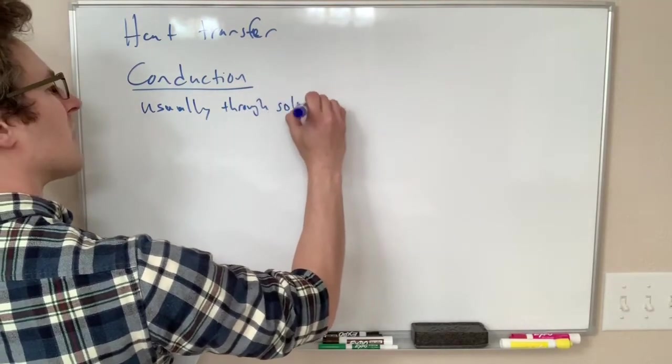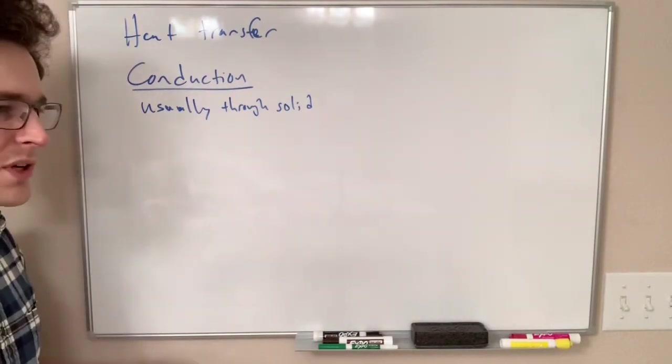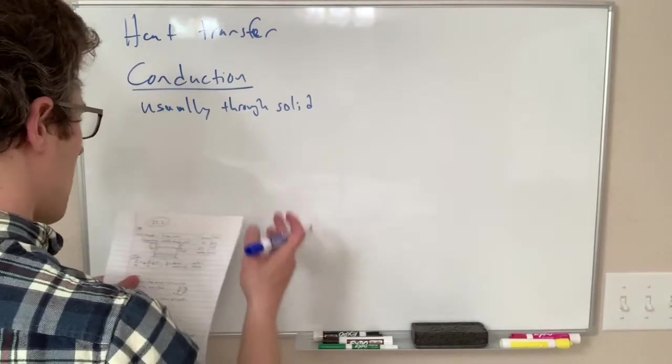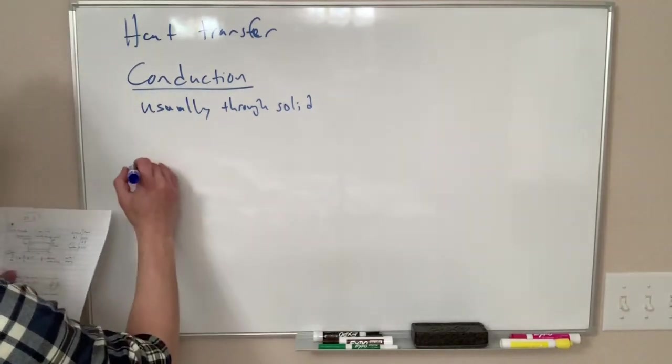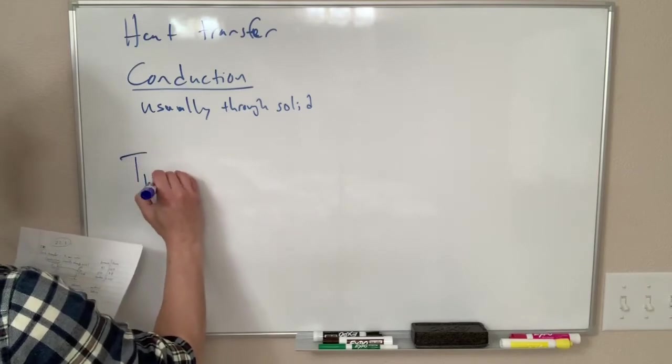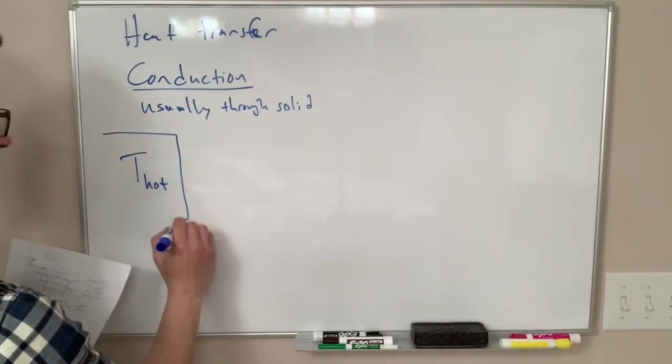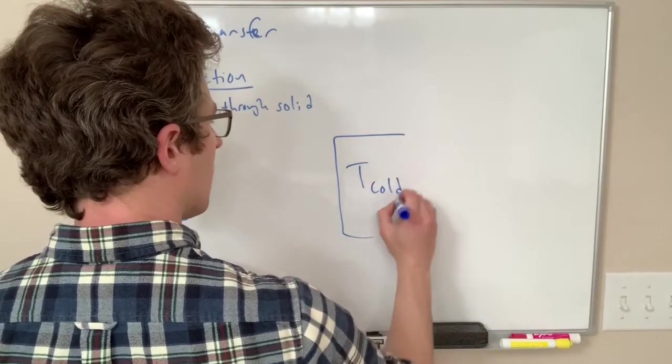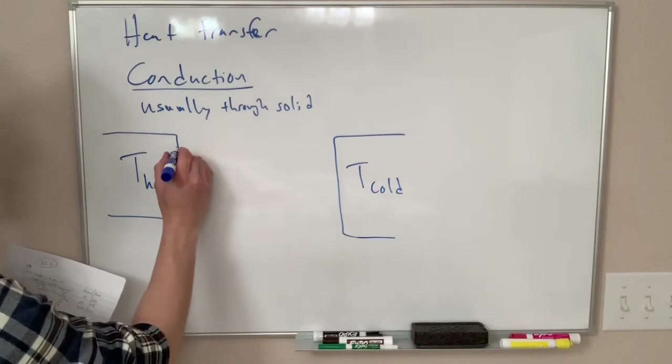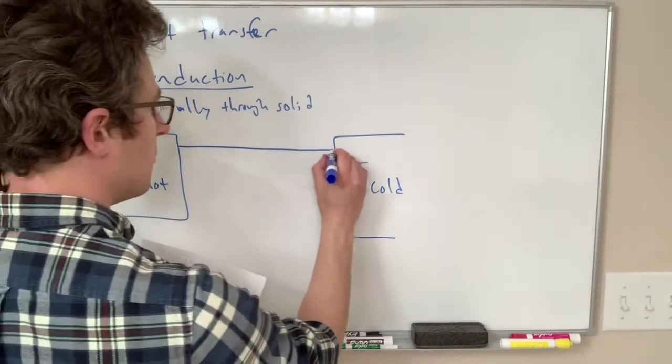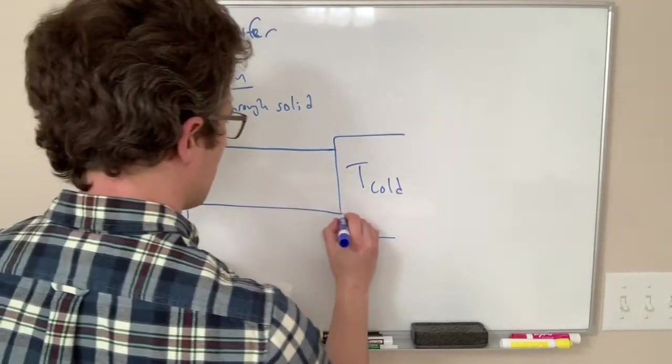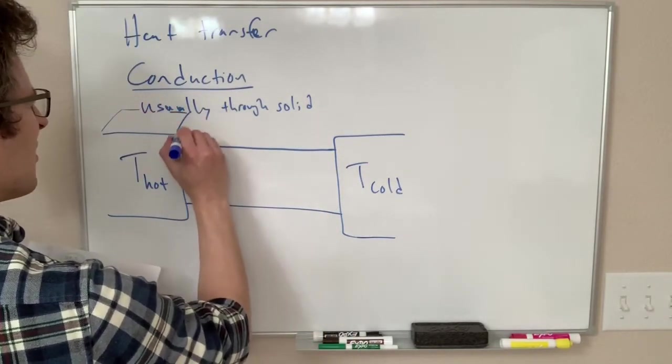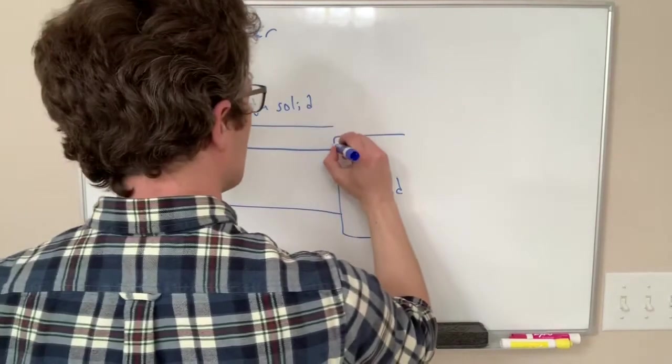You can look at conduction through liquids and gases also but because they're moving that gets more complicated as we'll see in a moment. Our picture of conduction looks kind of like this: we have something that's hot, we have something at a hot temperature over here and something at a cold temperature over here, and between the two we have some material, some solid material connecting them. This is supposed to be three-dimensional.